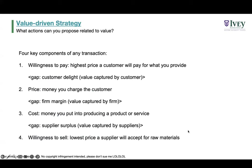In a value-driven strategy there are four key parts of any transaction. Willingness to pay is theoretically the highest price a customer will pay for what you provide. For example, at a ball game with no other food stands available, you could probably charge $25–30 for a hot dog if people are starving and stuck there for six hours — that's the willingness to pay.